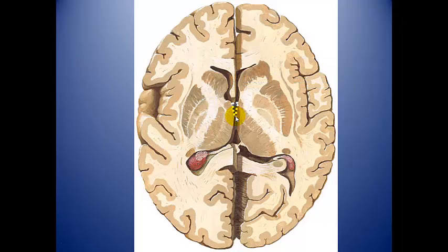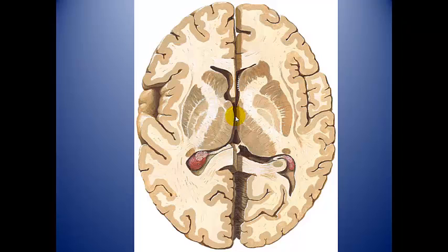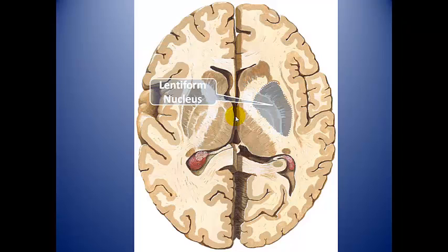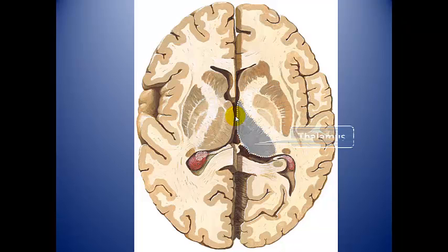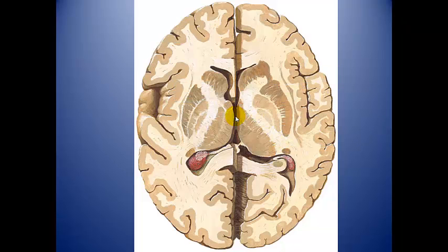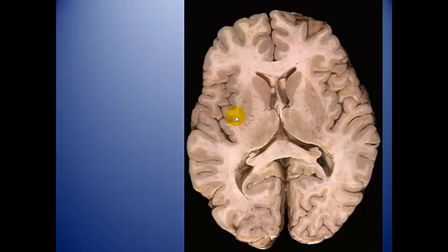Right here is the third ventricle and the posterior horn of the lateral ventricle. In this section we also identify: head of caudate, lentiform nucleus — which is putamen and globus pallidus — thalamus, anterior limb, genu, posterior limb of the internal capsule, external capsule, claustrum, extreme capsule, and insula.